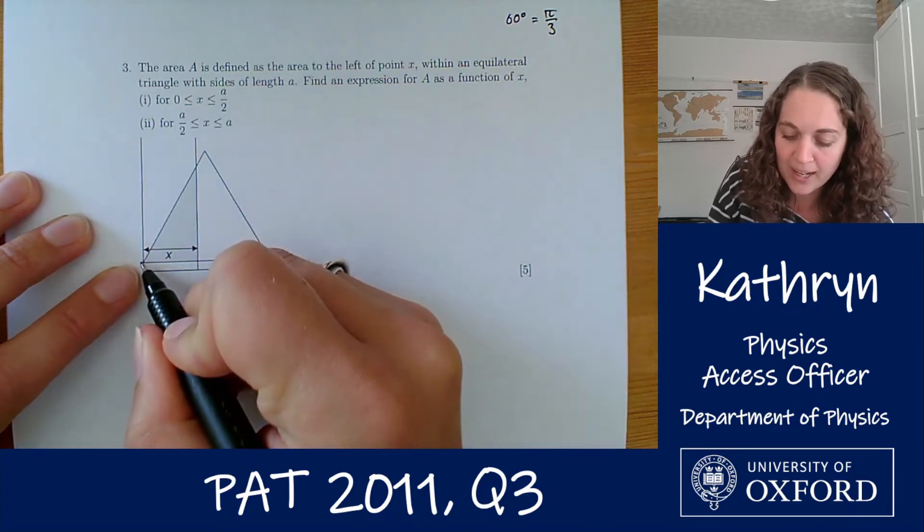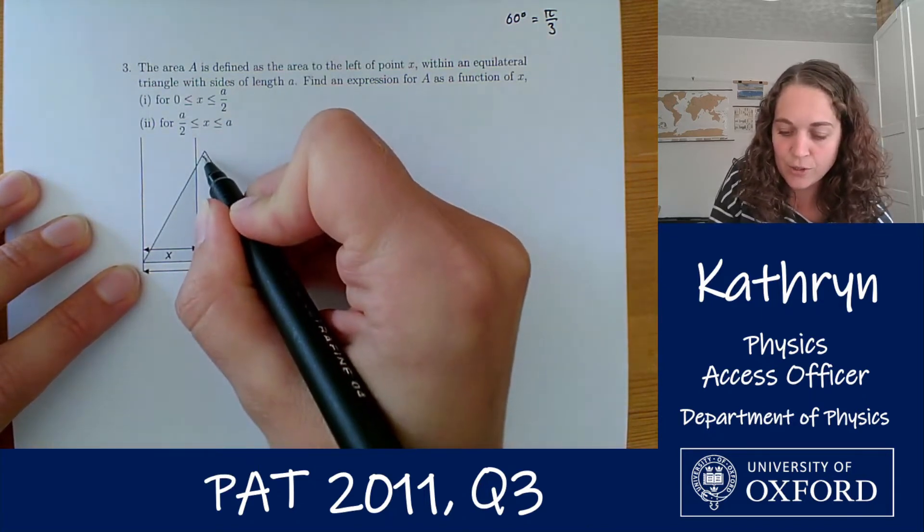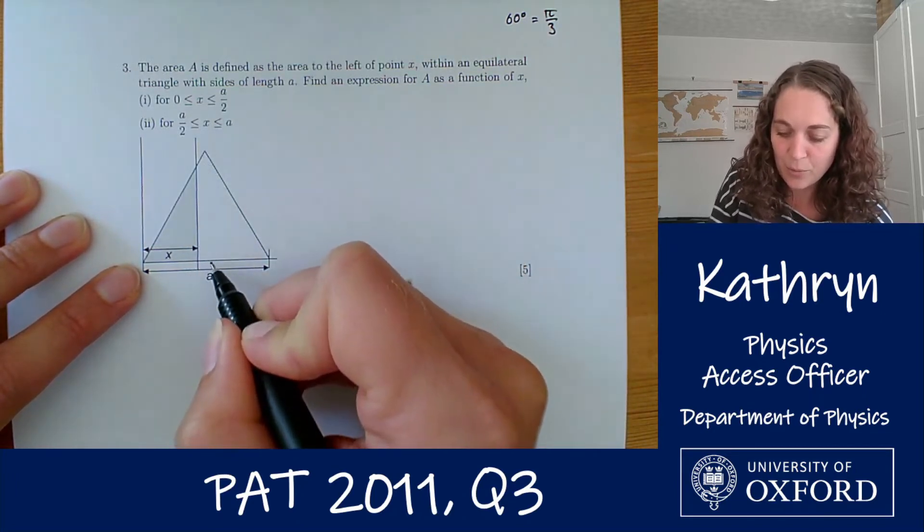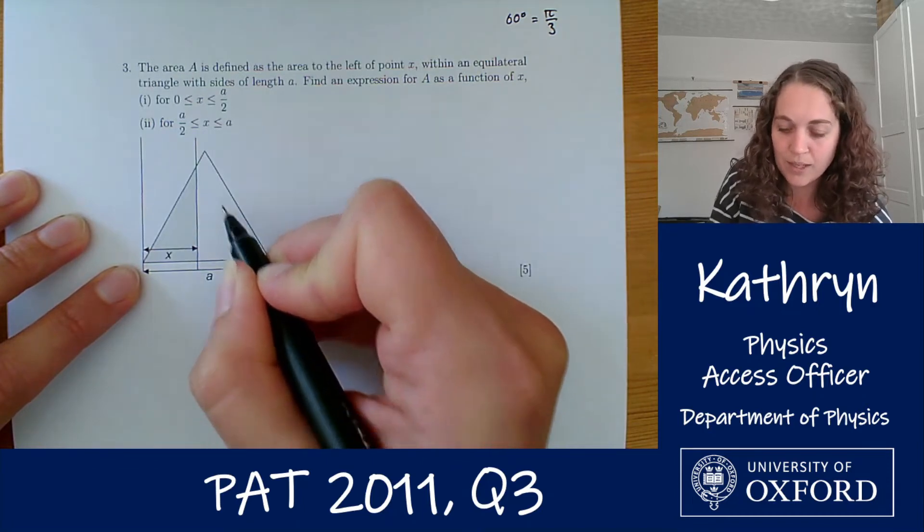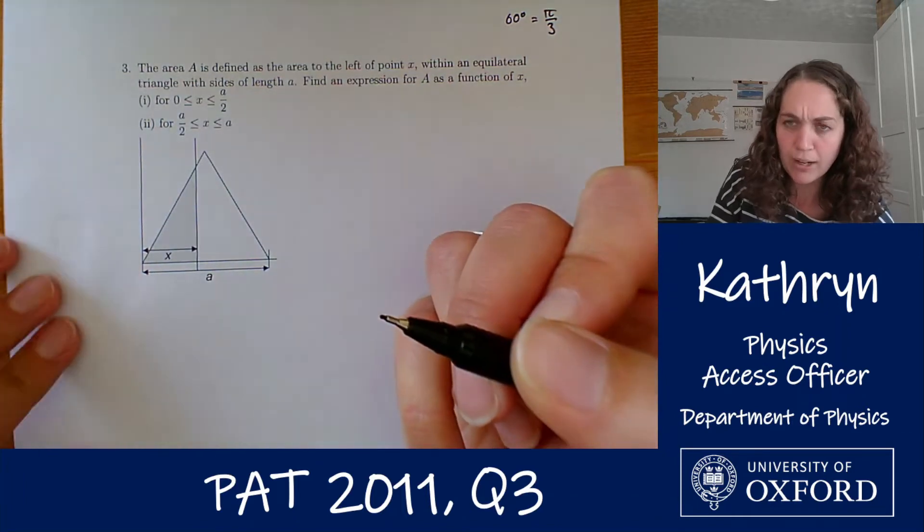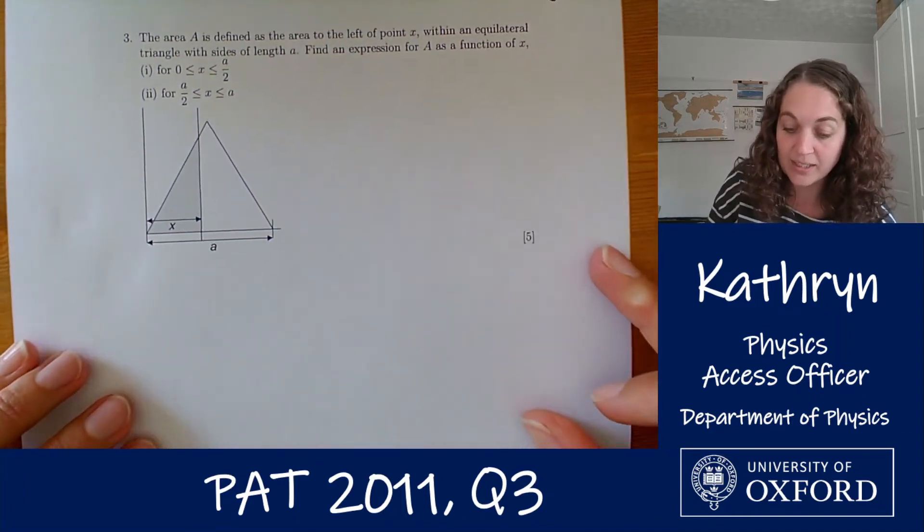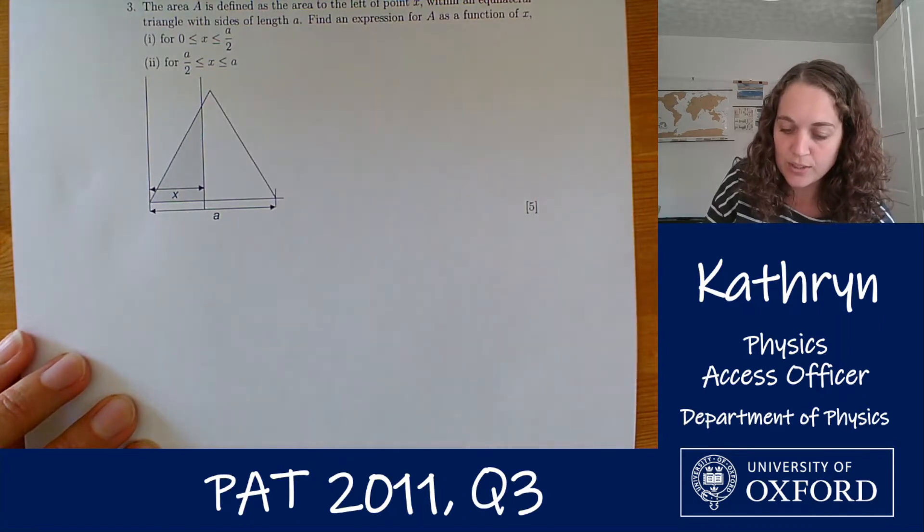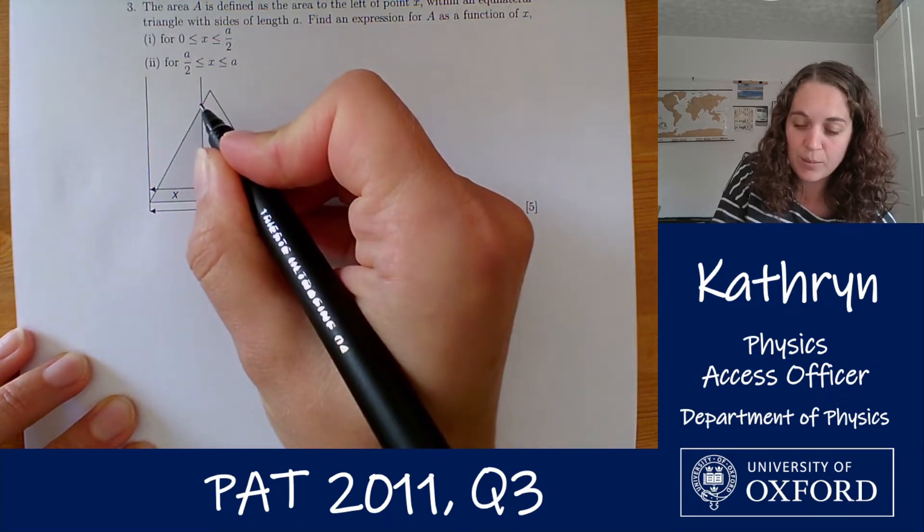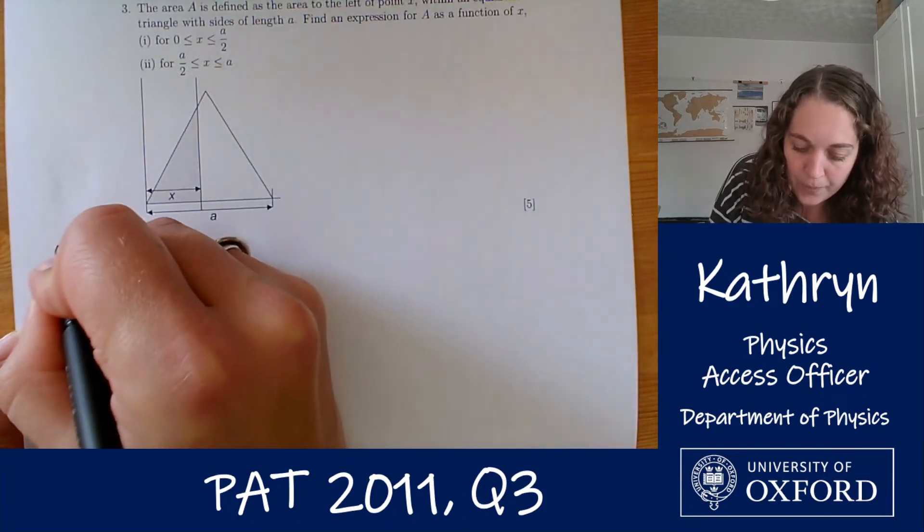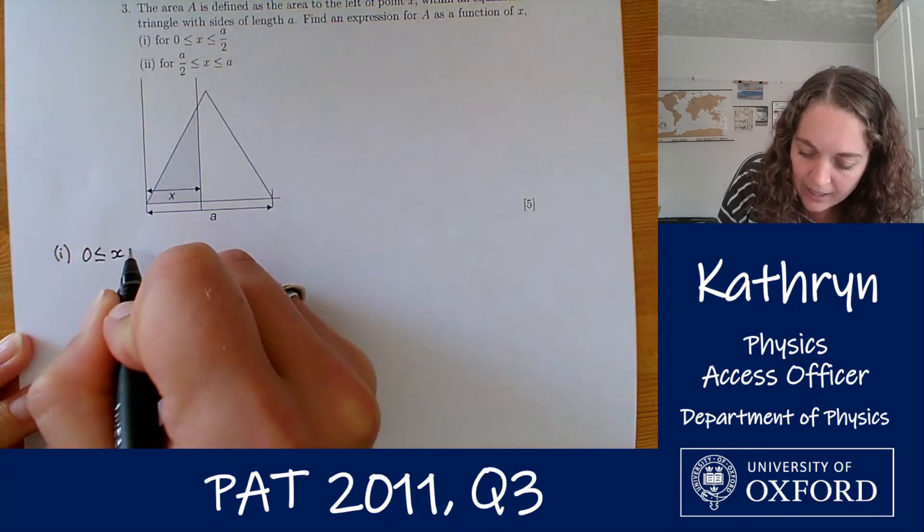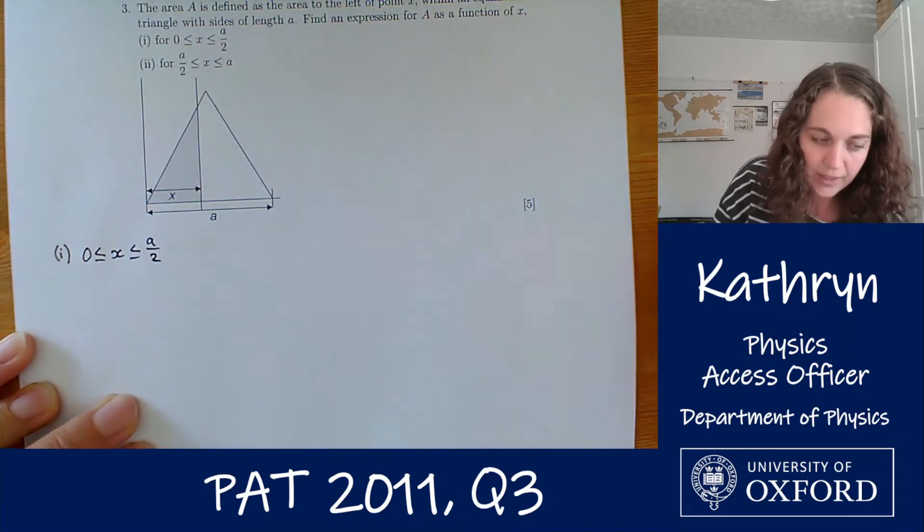So this first one is going to be for when X is between 0 and A over 2, up to this halfway point here, and then the second half is going to be asking us about what happens if X keeps going, keeps getting bigger. Then what is this shaded area A? Let's start with the straightforward one which is going to be this first half for X is between 0 and A over 2. So we're always going to be looking for a triangle shape like that.